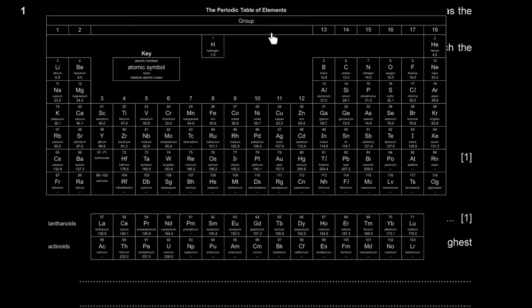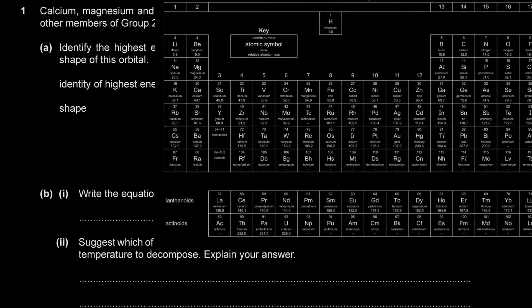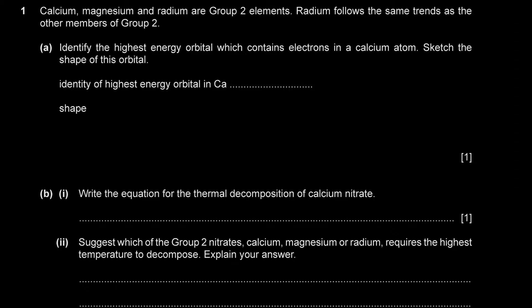The full configuration goes 1s2, 2s2, 2p6, 3s2, 3p6 up to argon, and then 4s1, 4s2. So the highest energy electron is in the 4s orbital. S orbitals are spherical in shape, so the sketch is just a sphere, or in two dimensions, a circle.